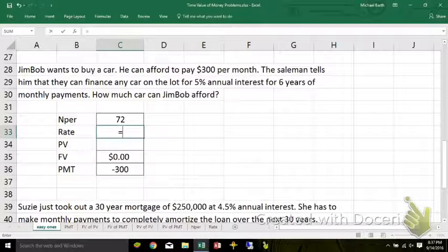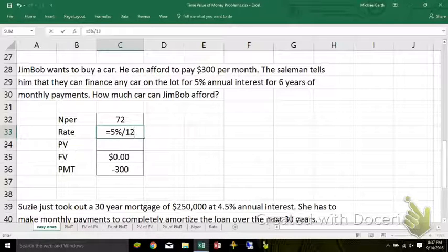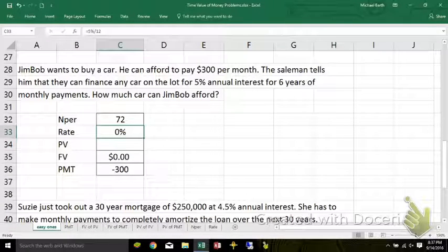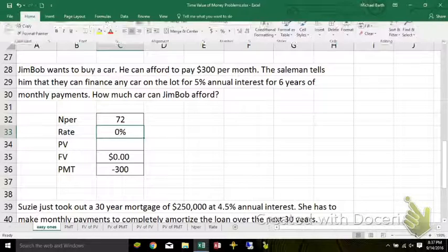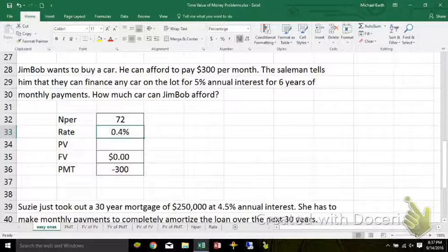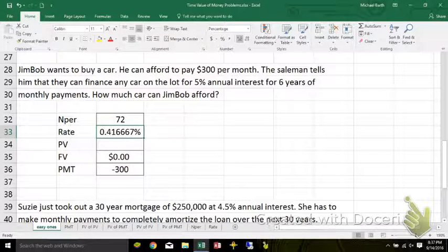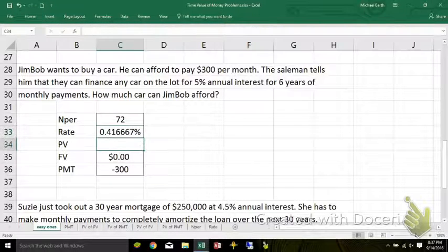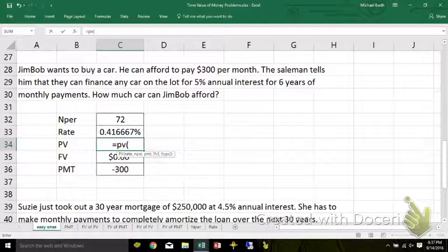It's a 5% annual interest, but you've got to divide that by 12 because he's making monthly payments. Let me add some decimal places so we can see. You actually put the actual number in there. Do not round. So the present value of that would be...